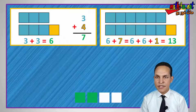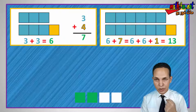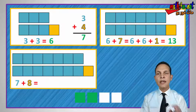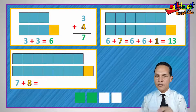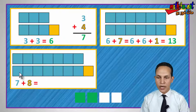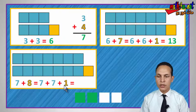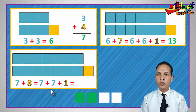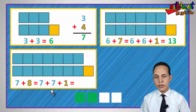Now focus carefully — my questions are harder than Ms. Dina's and Mr. John's. Here the question asks: seven plus eight equals what? Eight is the same as seven plus one. So we write seven plus seven plus one. Seven plus seven — the double — equals fourteen. Fourteen plus one equals fifteen.